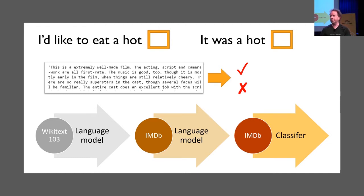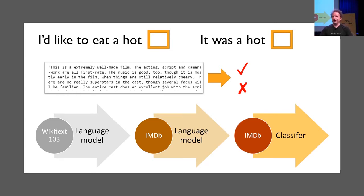Until very recently, neural nets didn't do a good job at this kind of classification problem because there wasn't enough information available. The trick — hopefully you can all guess — is to use transfer learning. Last year in this course I tried something a bit crazy: what if I apply transfer learning to NLP as well? I tried it out and it worked extraordinarily well. A year later, transfer learning in NLP is absolutely the hit thing. We're going to start with a pre-trained model trained to do something different from what we want, just like with ImageNet.